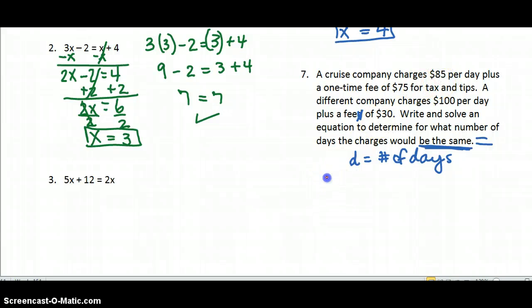The first company, it's $85 per day times the days plus a one-time fee of $75. And we want that to equal our other company. That's what we're checking for when they're the same, when they're equal. And they charge $100 per day. Same amount of days. We're looking to see how many days would make them equal plus the $30 one-time fee. So now we're ready to solve an equation where we have variables on both sides.